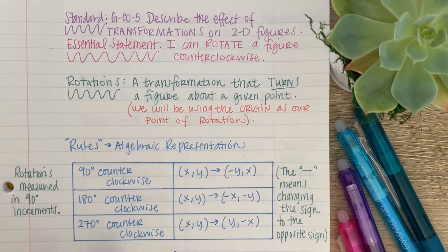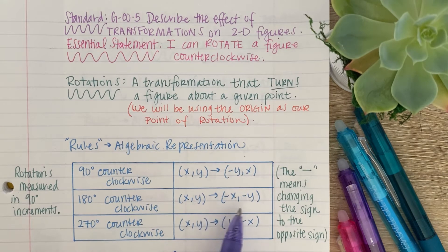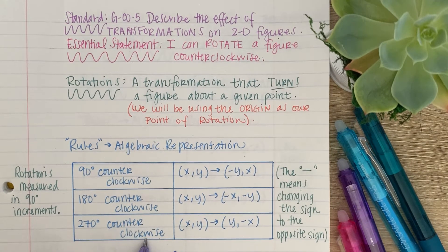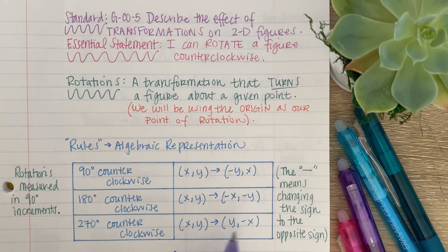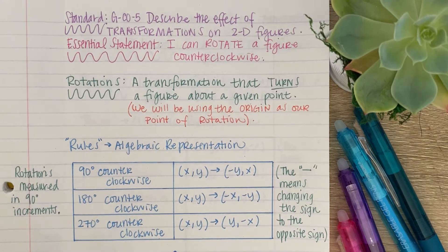So for 180 degrees counterclockwise, you take your (x, y), and all you do, you leave the numbers, but you change the sign on both the x and the y. And for 270 degrees counterclockwise, you take your (x, y), you flip the ordered pair, but then you leave this one, but you change the sign on the x. I know it's a little bit confusing, but I think you can do it.